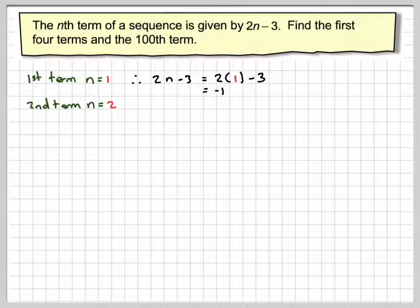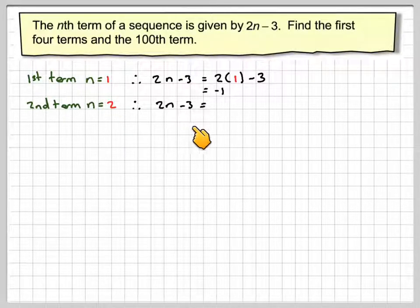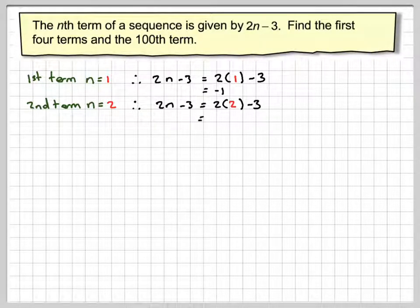The second term, n is 2. We're going to get 2n minus 3. That's going to give 2 times 2 take away 3, 4 take away 3, which gives that the term is 1.